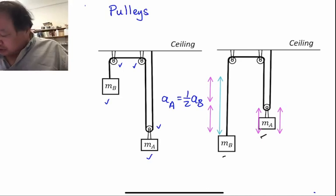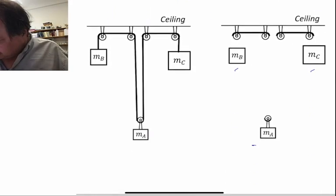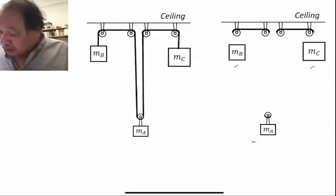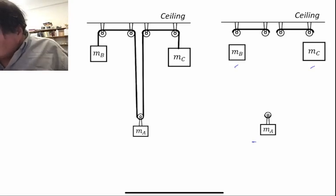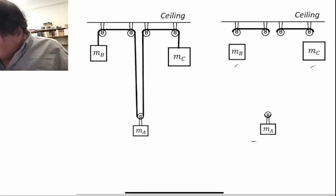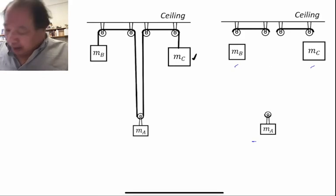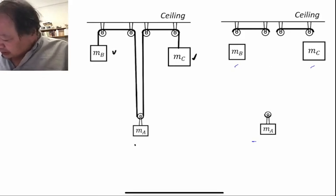And we can look at another situation. In this situation we now have five pulleys and our heaviest mass is going to be MC, followed by MB, and our lightest mass will be MA.